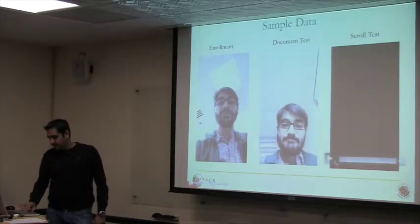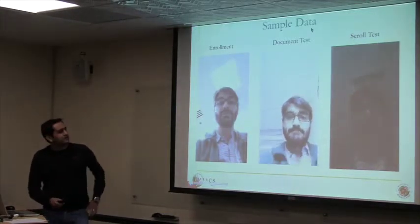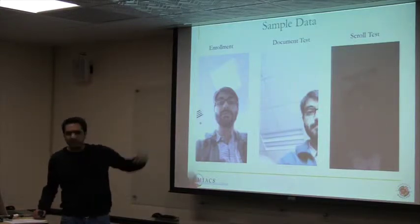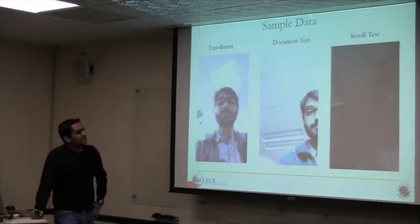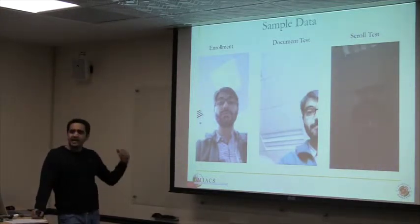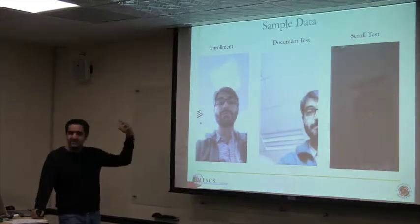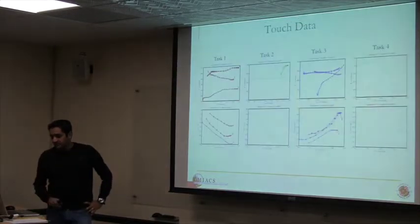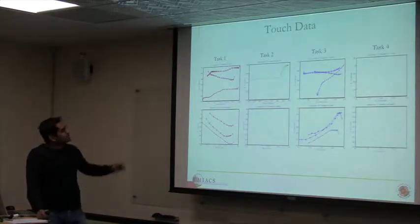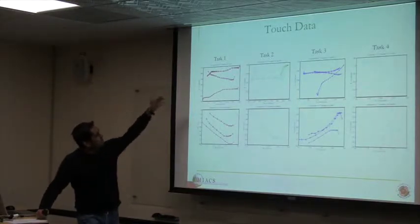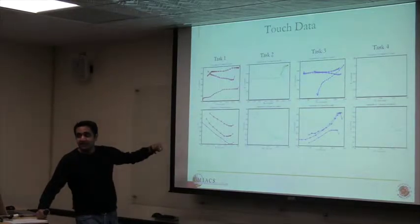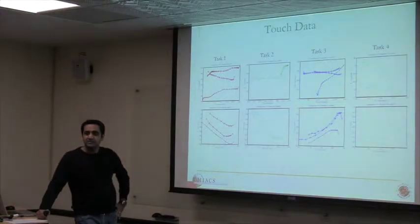And finally, here is the scroll task. You can see there are some variations we have to overcome — there is blur, sometimes you see a partial face, and so on. The idea is we take these videos, do face detection, extract features, and continuously monitor the user. These are some sample touch swipes showing four different tasks performed by two different individuals. They perform the same task but their swipes are different, showing that swipe information can clearly distinguish among different users.